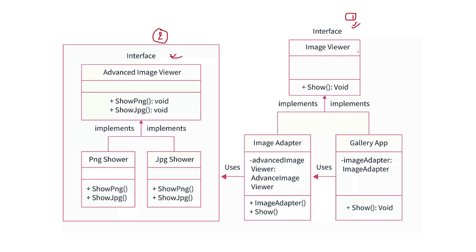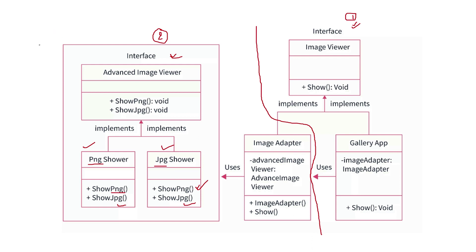Assume there is a basic image viewer interface where there is a show method defined. This show method is implemented by the gallery app — this is my basic application. Now after some time, we see there is an advanced image viewer interface, and this interface is implemented by two classes: a PNG shower and a JPG shower. The PNG shower implements the show PNG method and the show JPG is a dummy method. Similarly, the JPG shower implements the show JPG method and show PNG is a dummy method.